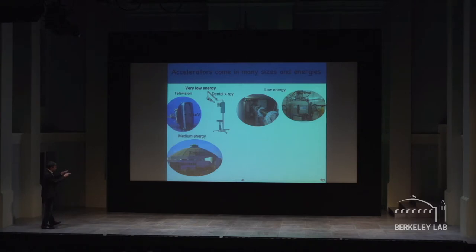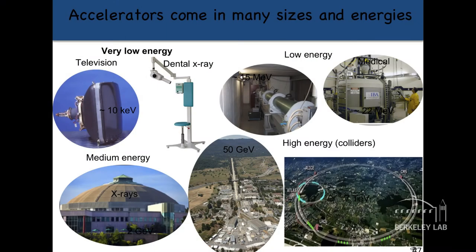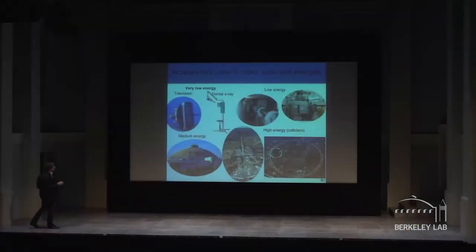In the lower part of the screen here I will show you a couple accelerators that are more discovery tools. Here at Berkeley we have one of the best in the world x-ray sources based on an accelerator. A beam goes around in a circle and as it goes around in a circle it emits light. At SLAC back in the 60s they built an accelerator which was two miles long. If you drive on 280 you drive actually over the accelerator.